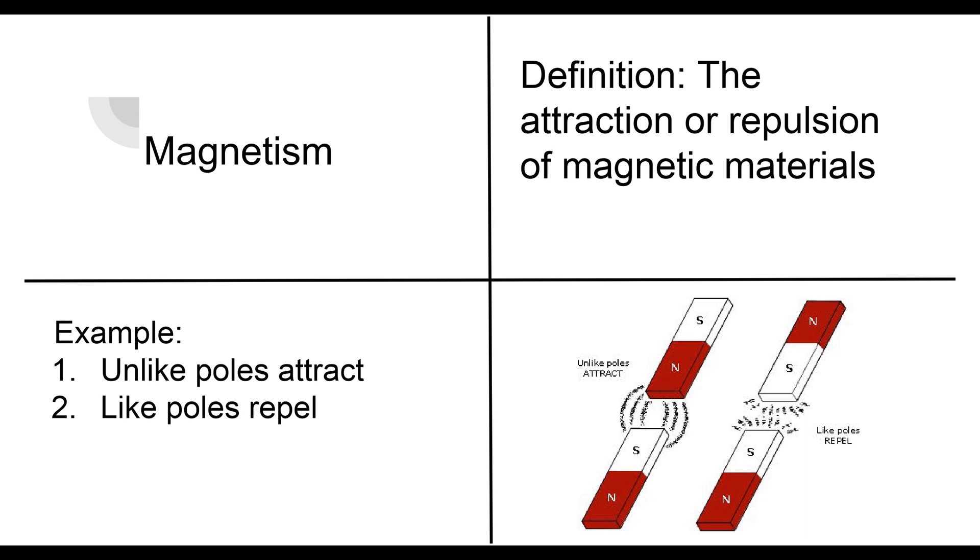Our next word we're going to talk about is magnetism. So magnetism is the attraction or repulsion of magnetic materials.